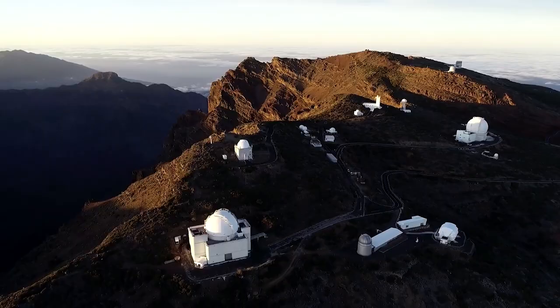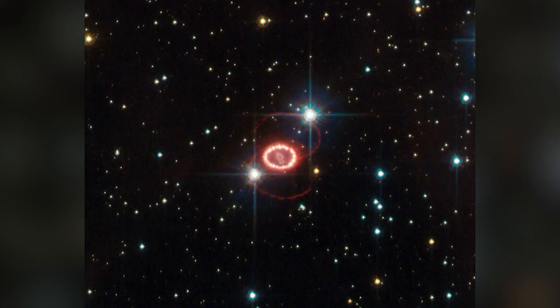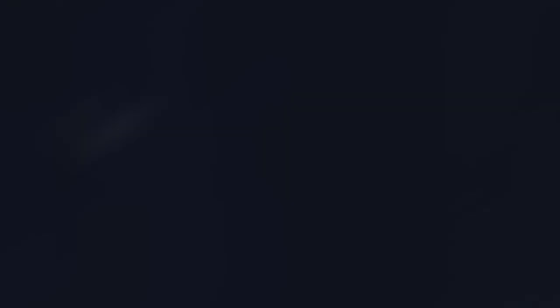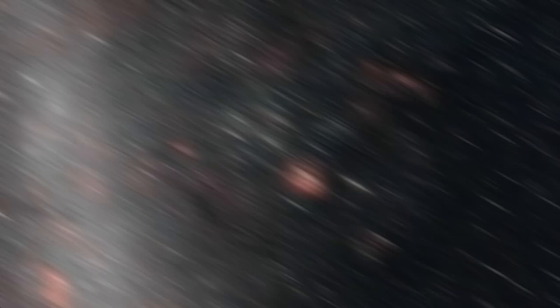Supernova 1987A, or SN 1987A for short, excited scientists greatly since it was the first supernova seen with the naked human eye in almost 400 years. It quickly rose to the top of the list of the most researched astrophysical phenomena. Only roughly 170,000 light-years from Earth, the supernova may be found in the Large Magellanic Cloud, a tiny neighbor galaxy to the Milky Way.